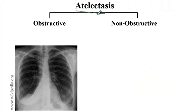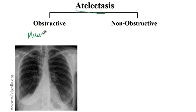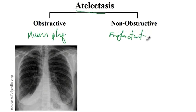Atelectasis is a complete or partial collapse of a lung or lobe of the lung. It usually develops when alveoli collapse and air can no longer get through them. There are two forms: obstructive, such as in children with a mucous plug increasing risk of atelectasis, and non-obstructive, from parenchymal compression, surfactant dysfunction, or accelerated forces like in pilots and astronauts where too much acceleration causes atelectasis.